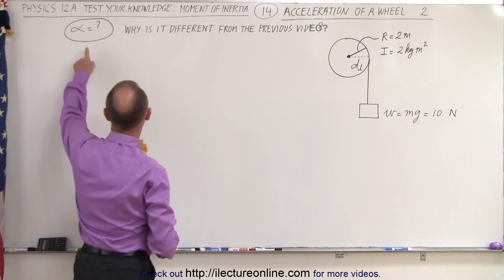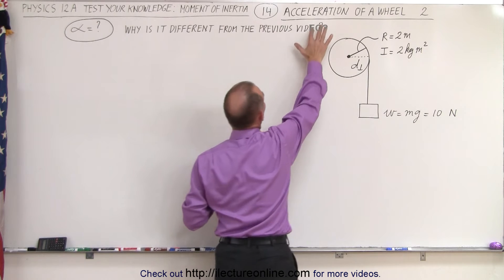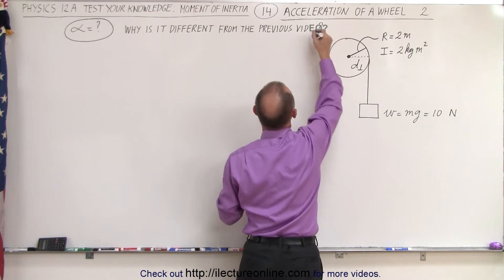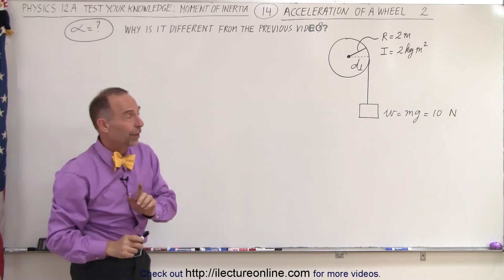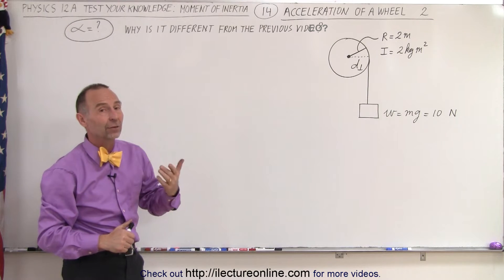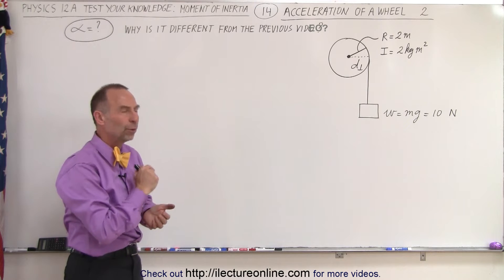We're trying to find the angular acceleration and we're supposed to find why it's different than the result we got in the previous video. Remember, in the previous video we had an angular acceleration of 10 radians per second squared, so what will we get here?